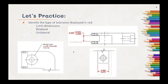Looking at this first image here, that is a unilateral dimension. We can tell that it's unilateral because it only moves in one direction, uni meaning one direction, and lateral being direction. So we can go over by 0.005, but we cannot be smaller.